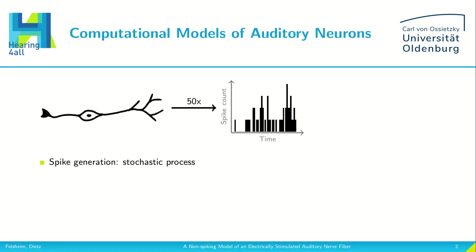When we stimulate an auditory neuron electrically or acoustically it can produce an action potential or a spike. However, the spike generation is a stochastic process, which means if we stimulate the same neuron twice we can get a slightly different result. Therefore, such experiments are normally repeated many times and the output can be displayed as a spike count over time.